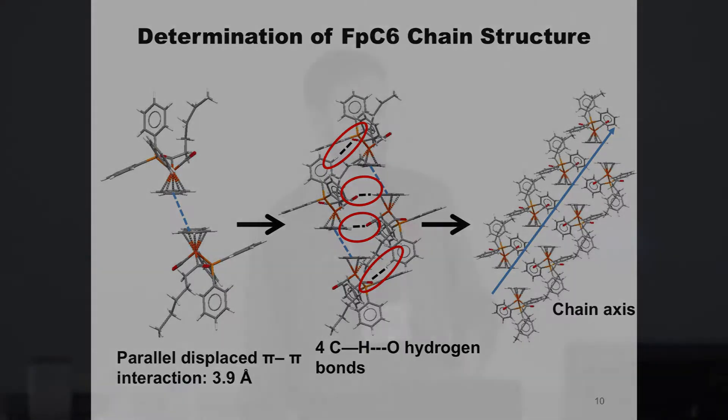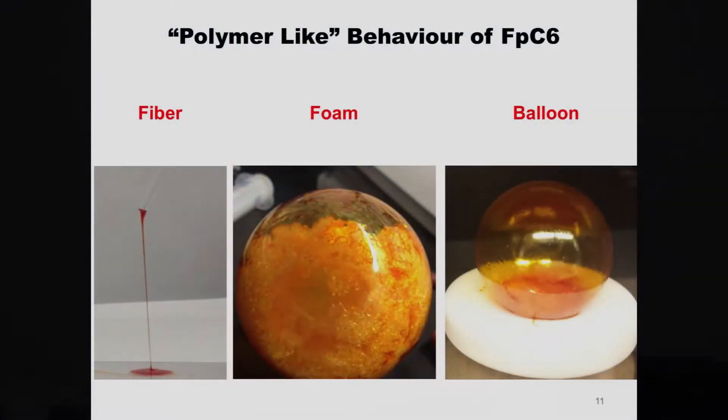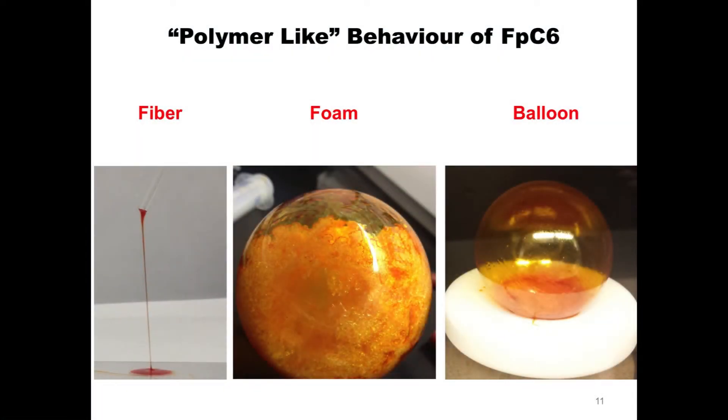So as soon as we made this material, we observed some really cool polymeric behavior. We were able to draw fibers up to 30 centimeters from the melt, we were able to prepare foams, and if we were very careful we could create very large bubbles kind of like a balloon. We've also characterized this material's rheological properties. It's viscoelastic like polymers, so it's very polymer-like. And we've confirmed the chain structure, like I said, through different techniques.